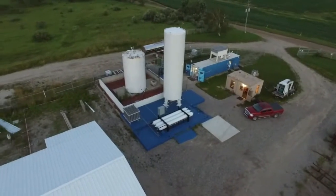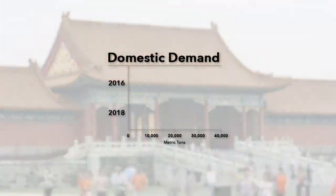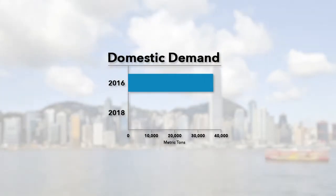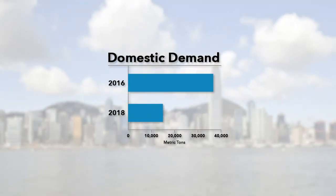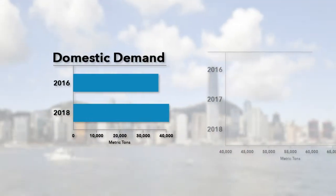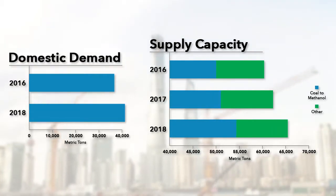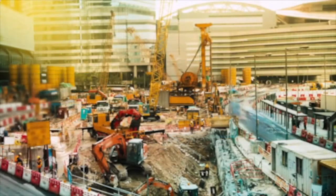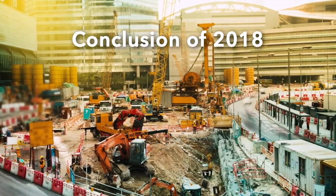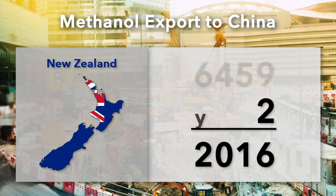Methanol to olefins, or MTO, is the biggest driver of demand growth in China. The domestic demand for MTO during 2016 was around 38,000 metric tons and is projected to reach 41,000 metric tons by the end of 2018. These high demands are skyrocketing the country's supply capacity, spurring the construction of two new MTO plants in China scheduled to be finished by the conclusion of 2018. Other countries are also seeing big opportunities in the MTO industry, like New Zealand, as their methanol exports to China during 2016 were almost double that of 2015.